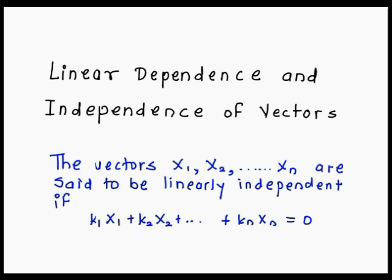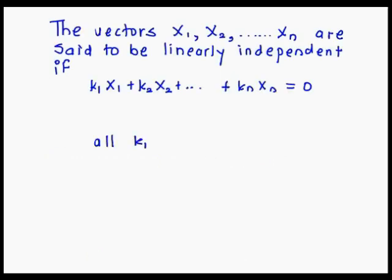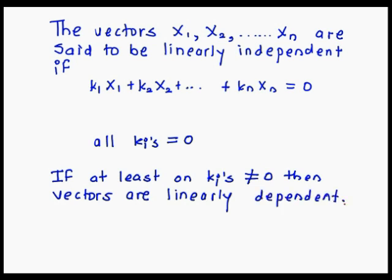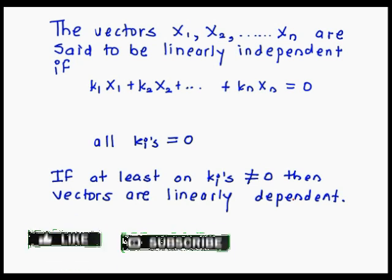When we say that this is linearly dependent: if we get at least one ki value that is not equal to 0, then we say that the vector is linearly dependent. Remember this — at least one ki value is not equal to 0, meaning if we get one non-zero value for ki, the vectors are linearly dependent. Hope you understand the definition of linearly dependent and independent.